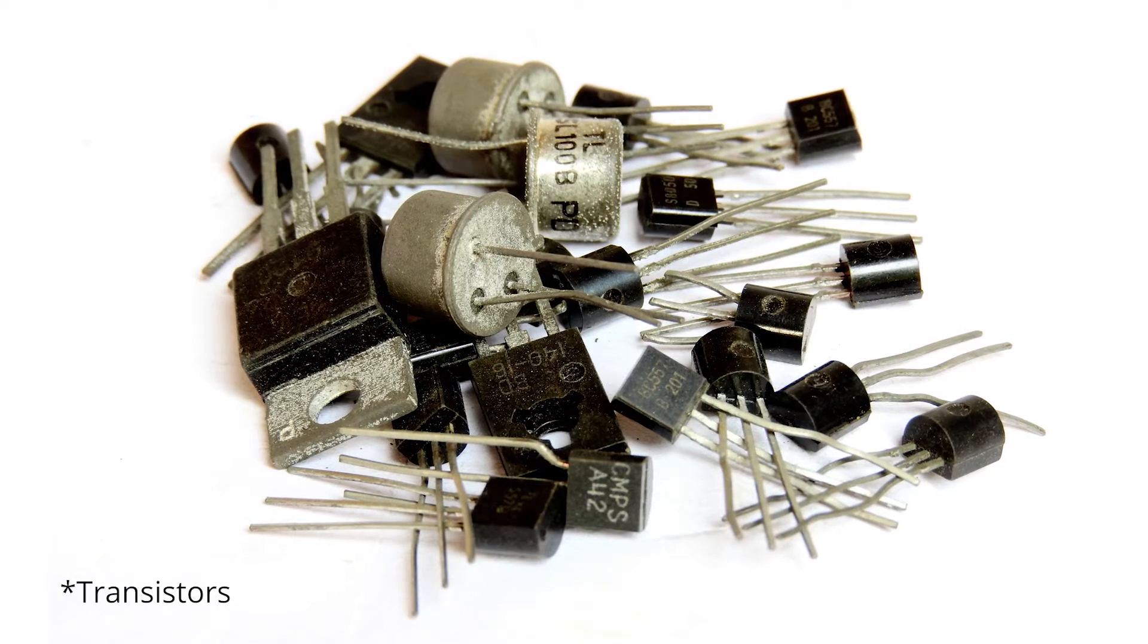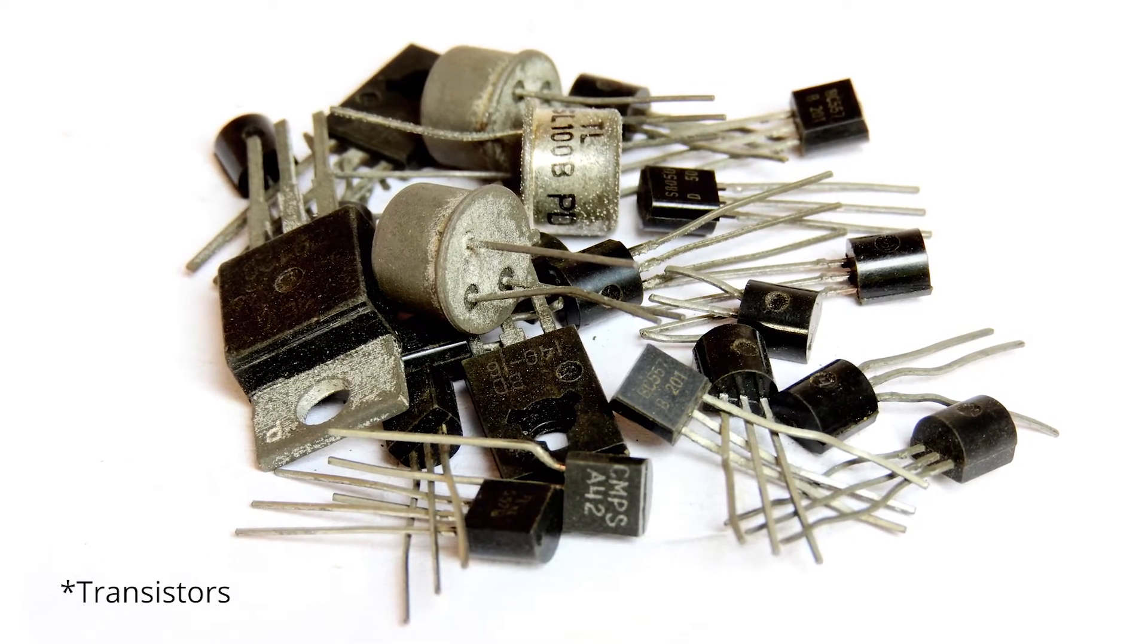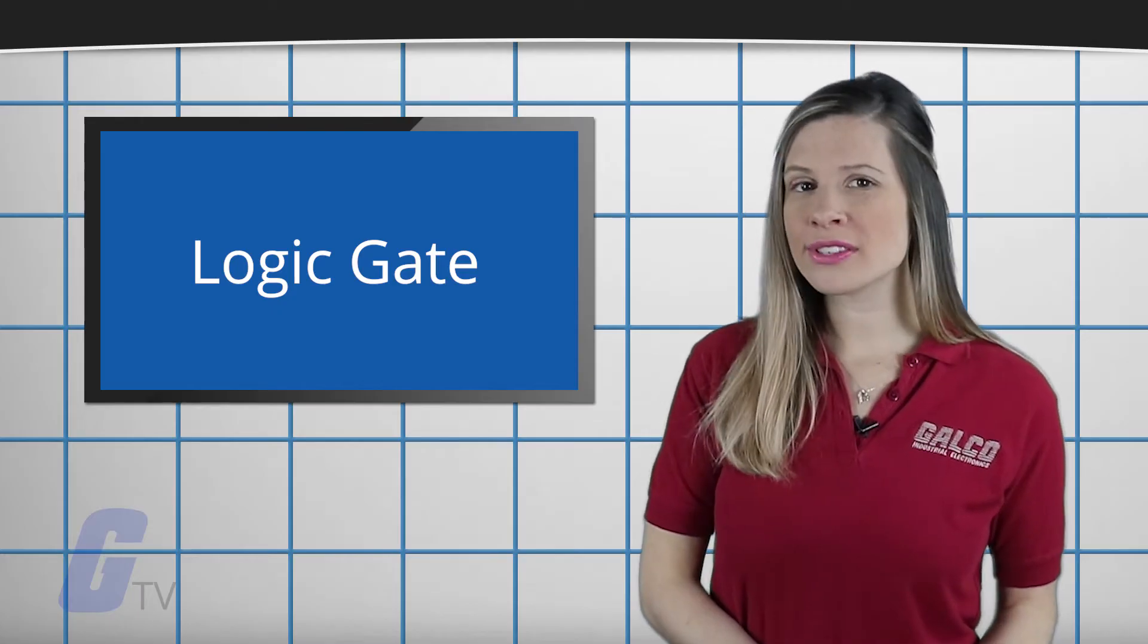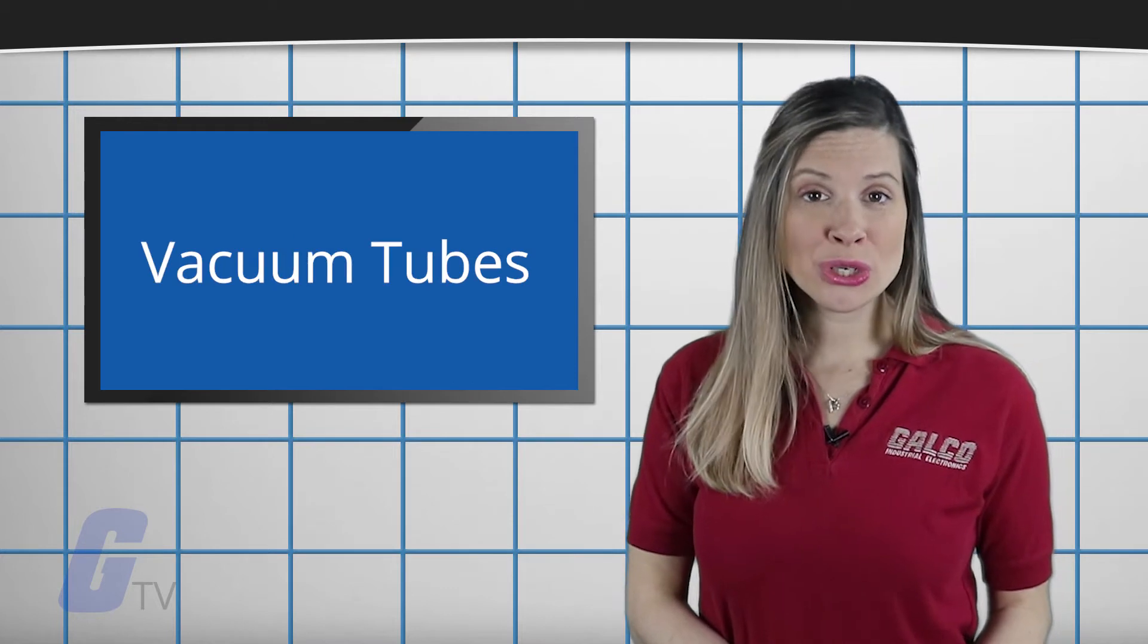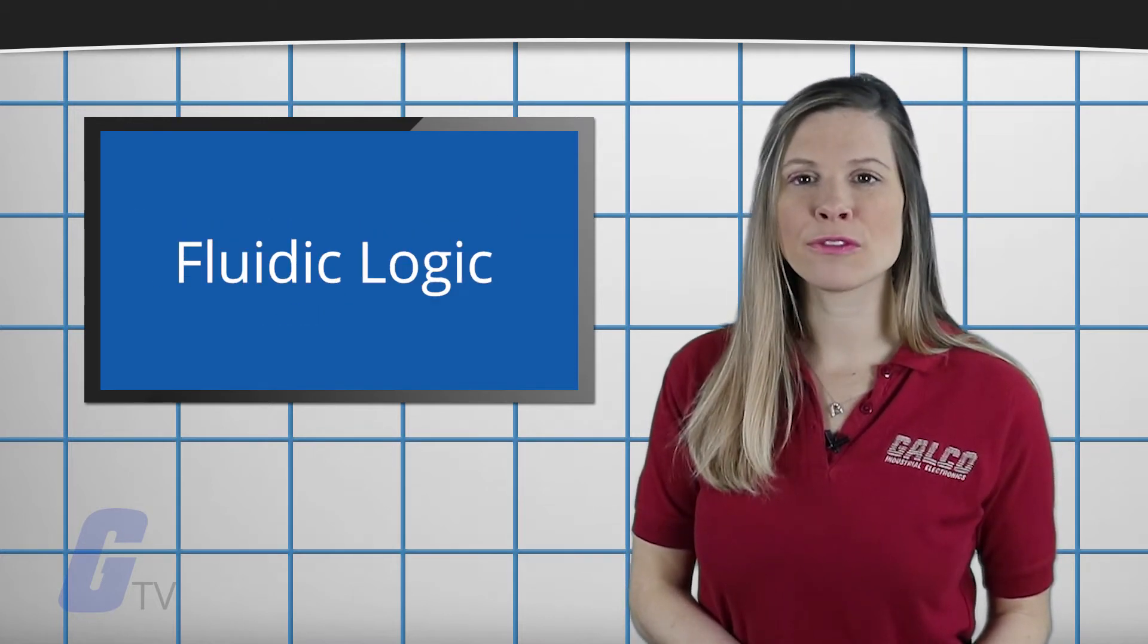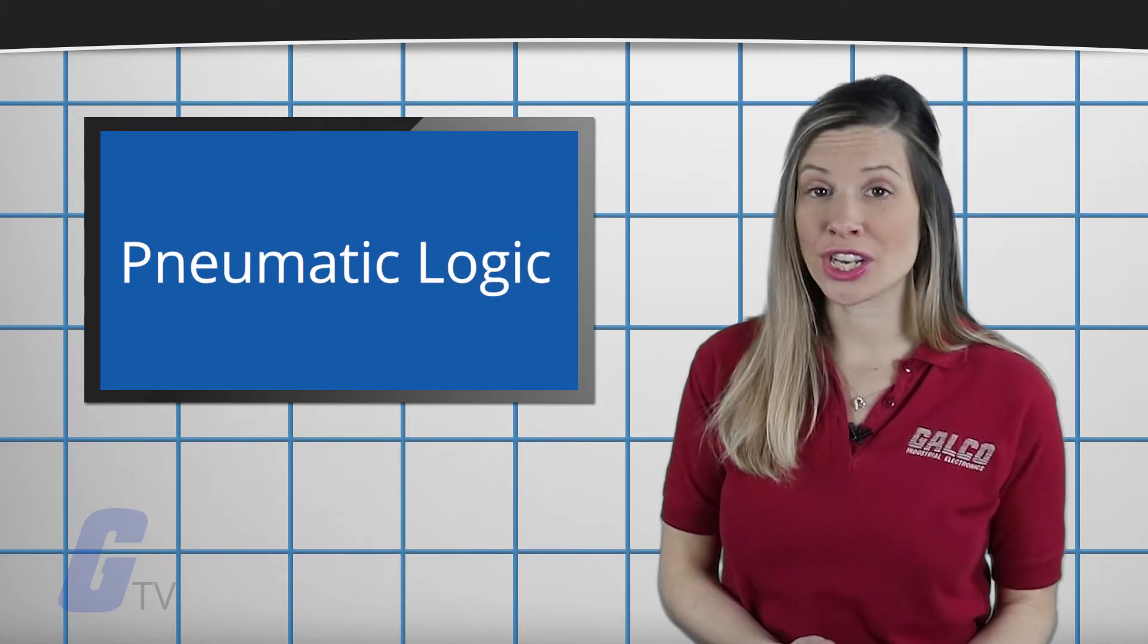Logic gates are primarily implemented using diodes or transistors acting as electronic switches, but can also be constructed using vacuum tubes, electromagnetic relays, fluidic logic, pneumatic logic, optics, molecules, or even mechanical elements.